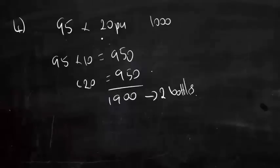We have to do 95 times 20 but it's easier to first times by 10, so you just add a 0. So times 20 is 1900 cm³ of liquid and one bottle is 1000 so we need 2 bottles.